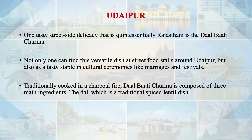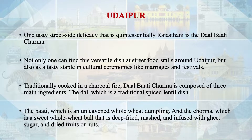Traditionally, food here is also cooked on charcoal fire. The dal bati churma comprises dal, a spiced lentil dish; the bati, made of whole wheat dumplings; and the churma, a sweet whole wheat ball that is deep fried, mashed and infused with pure ghee, sugar and dried fruit. This is again a very popular item.